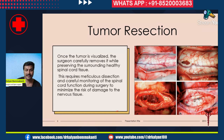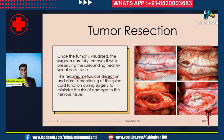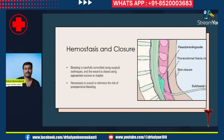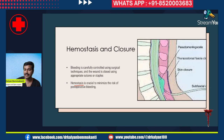Tumor removal requires meticulous dissection and careful monitoring of spinal cord function. Depending on financial conditions and institute protocol, intraoperative monitoring may be used. This meticulous dissection minimizes the risk of damage to the spinal cord. Controlling bleeding is very important — ensure perfect hemostasis so bleeding is completely controlled. The wound is then closed using appropriate sutures. Hemostasis is crucial to minimize the risk of post-operative bleeding, and a drain is usually placed so that any residual bleeding can exit through it.